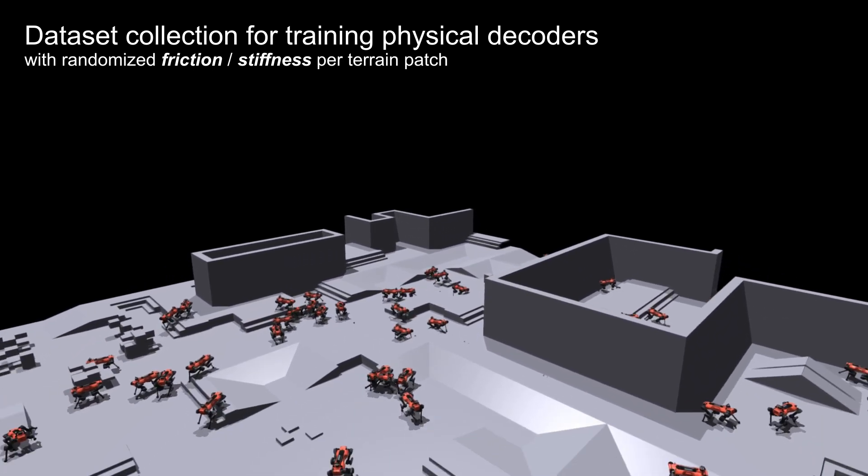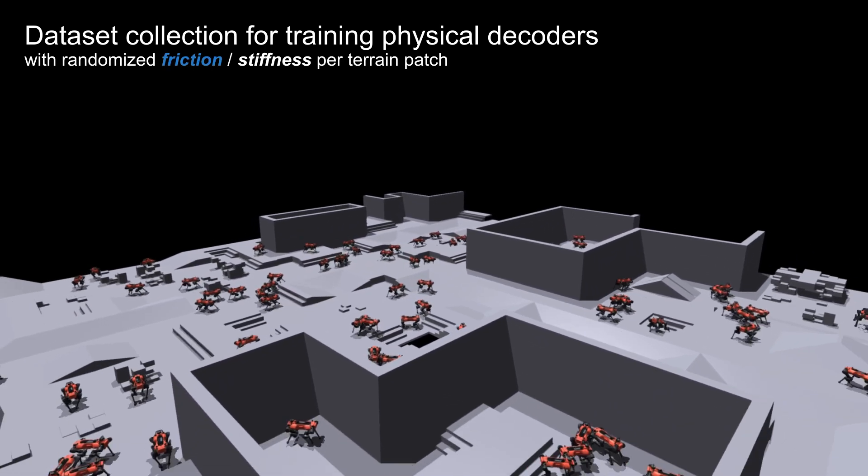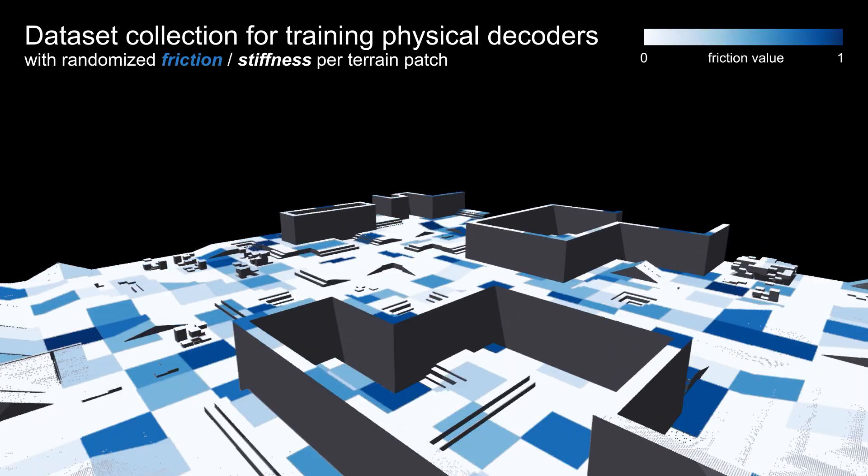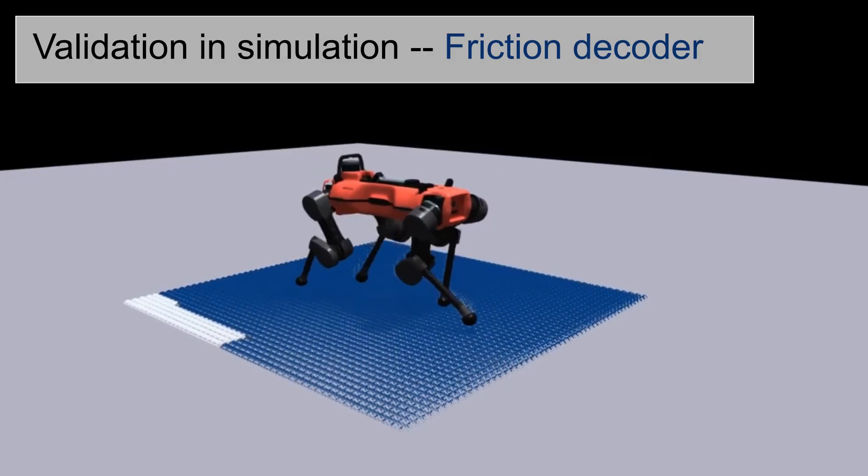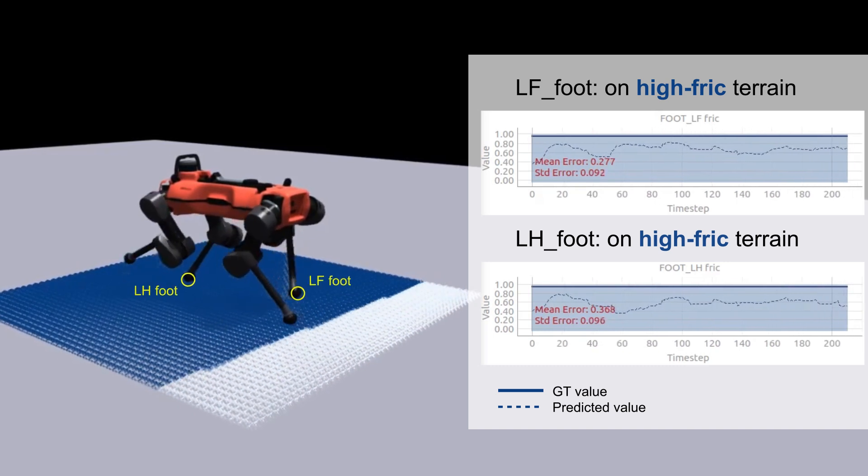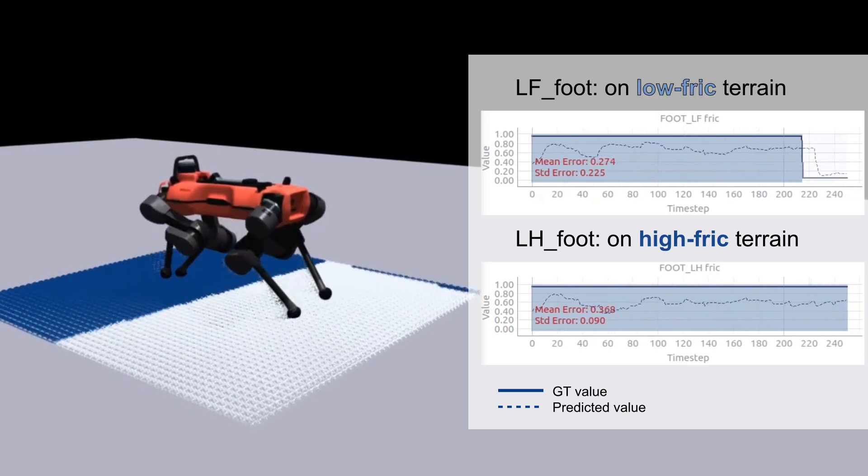In the first part, to train these decoders, we collect data sets in parallel simulation by randomizing the friction and stiffness parameters per terrain patch. After training, we first validate the decoders in simulation where the ground truth terrain physical parameters are available.